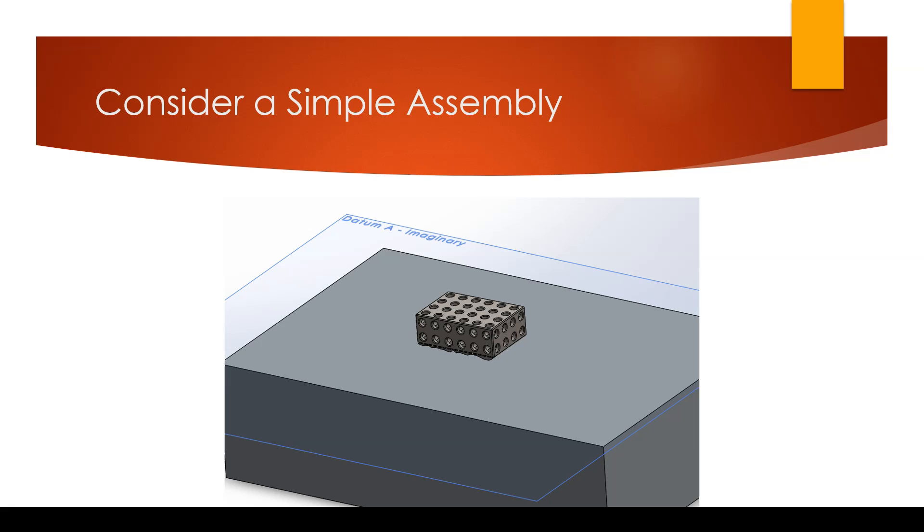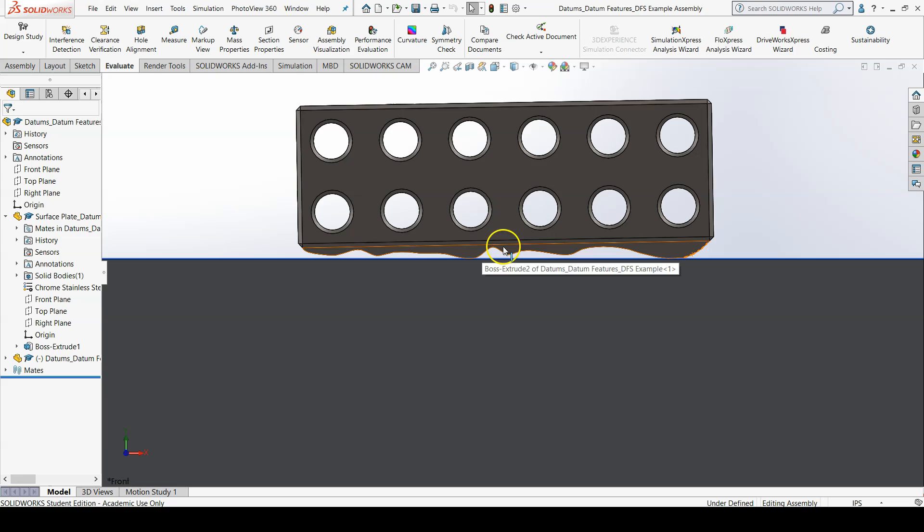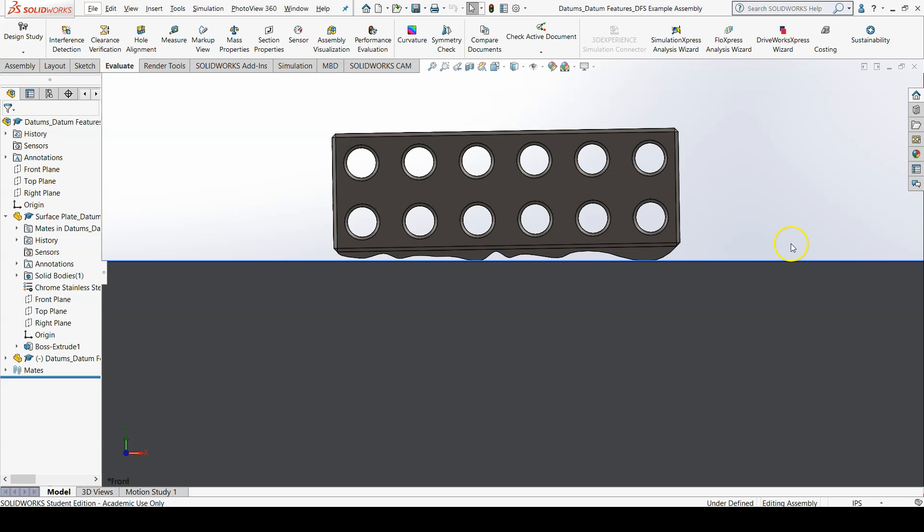Let's get a better picture of this through an example. The 123 block with all the holes is the part in this scenario, and the bottom surface of the 123 block is datum feature A. Zooming in, you can see that datum feature A is imperfect, which is why there needs to be a datum plane A that contacts all the high points of the surface. The high points are always in contact with the mating parts.